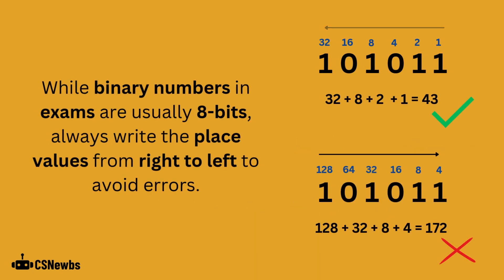Binary numbers in exams will usually be shown to you in 8 bits, but it might not be. Make sure that you write the place values from right to left, starting at 1, rather than left to right, starting at 128, so that you don't make any errors.